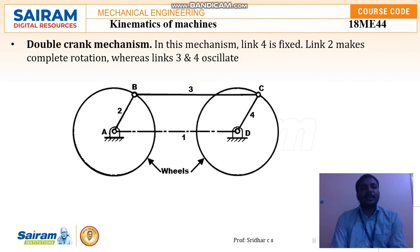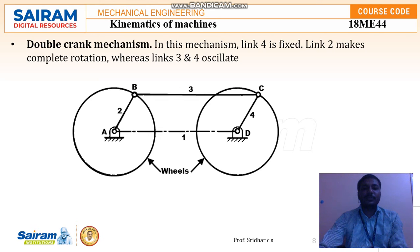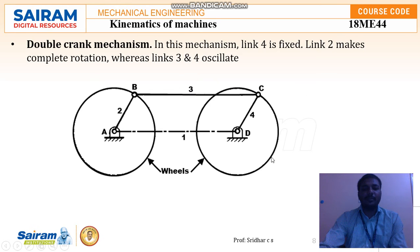Next we will see another type of mechanism called the double crank mechanism. This type of mechanism is mainly used in the steering system of four-wheel vehicles. In this mechanism there are four links: 1, 2, 3, 4. Link four is fixed and link two can make complete rotation, while links three and four can oscillate. The rotary motion is converted to oscillating motion, which gives direction to the wheels.